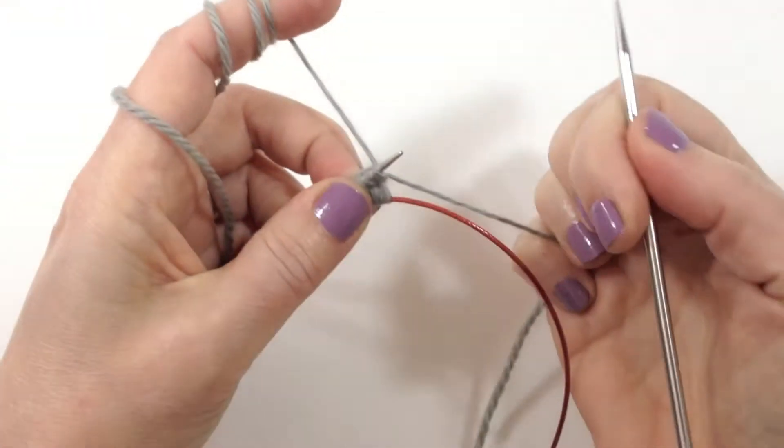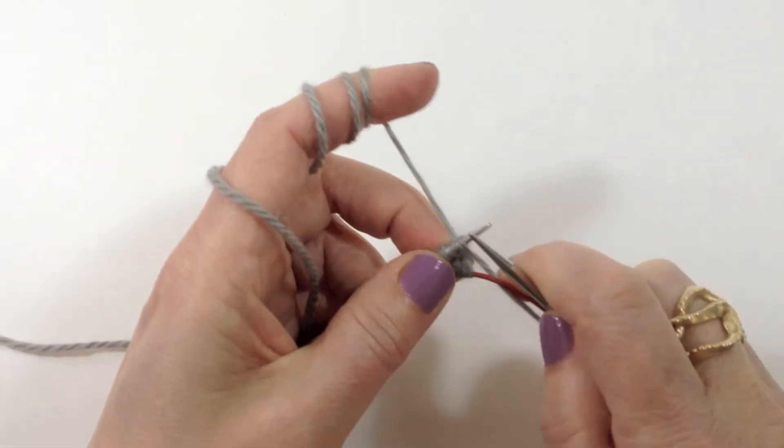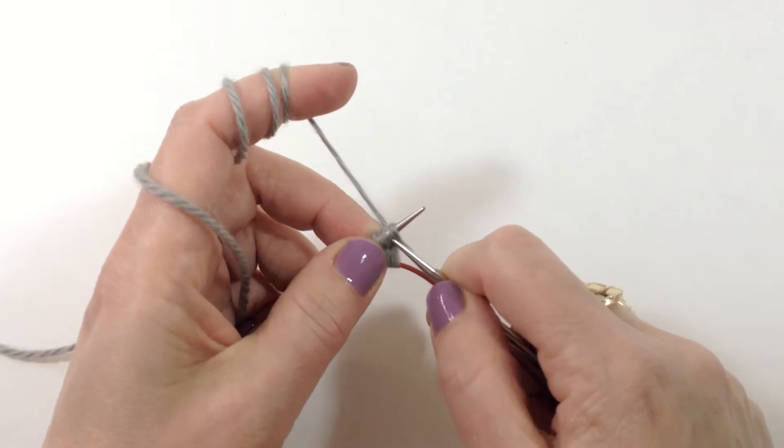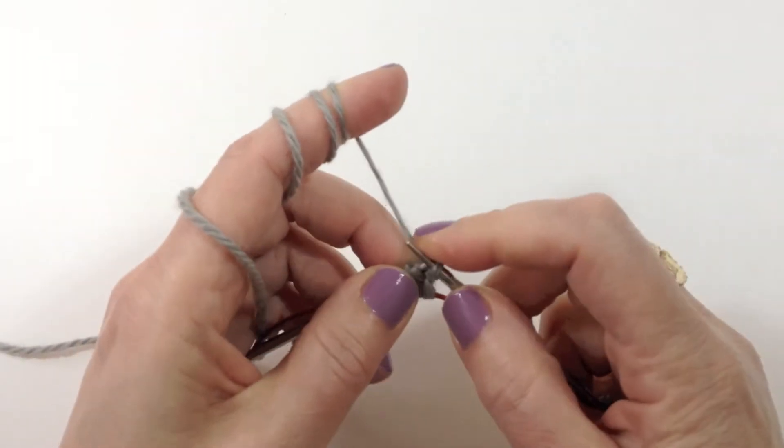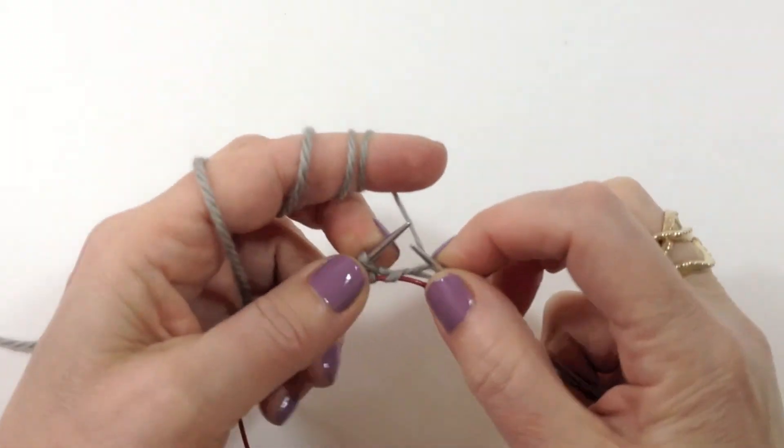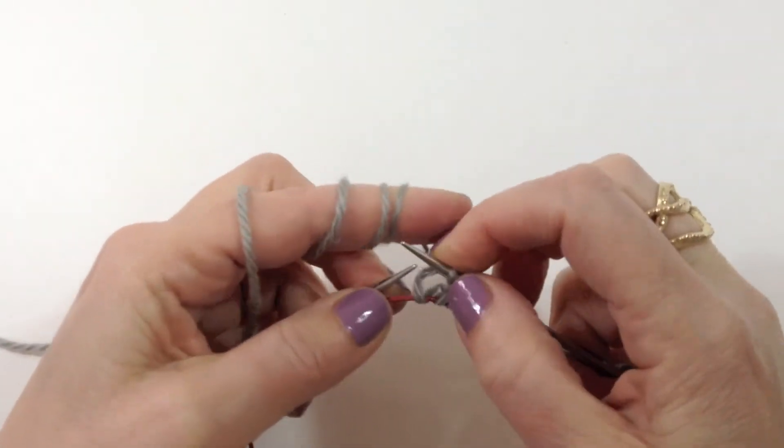I like to grab the tail of the yarn with my pinky when I'm making that first stitch, but whatever works for you. We're just going to knit across those stitches, one, two, three, four.